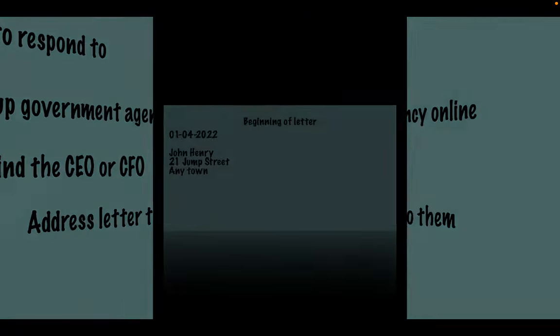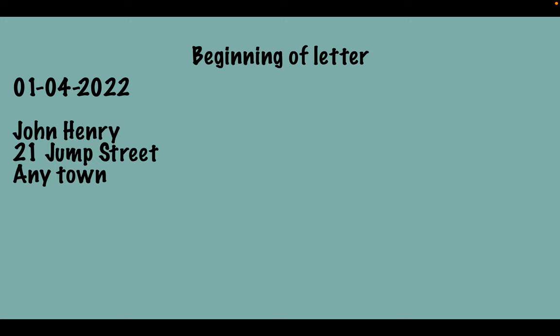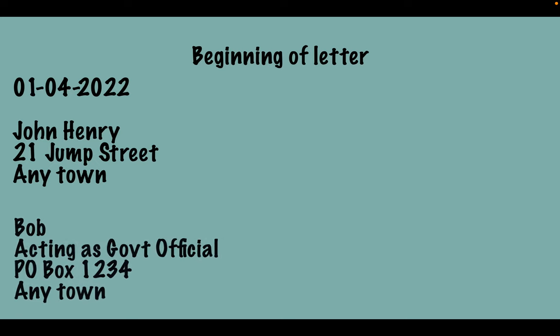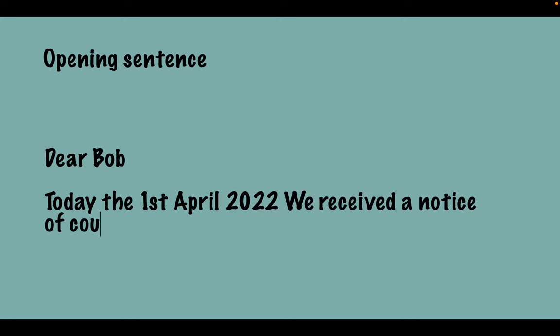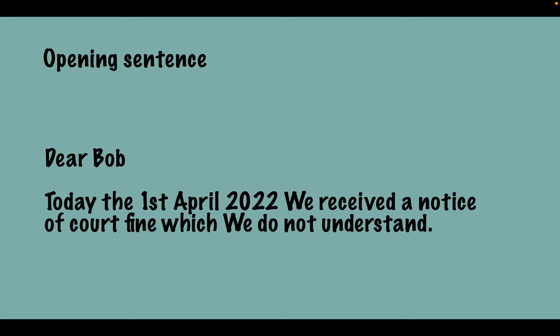Then we address the letter to that person. So let's start the letter. The beginning of the letter will start off with the date and our name — John Henry, 21 Jump Street — and we'll address it to Bob, acting as government official, whether it's Inland Revenue or any other ABC agency of the government. The opening sentence will be plain and simple: we're going to acknowledge that we received something from them and say we don't understand them. For example: 'Today the 1st of April 2022, we received a notice of court fine which we do not understand.' We're telling them straight off we don't stand under you.